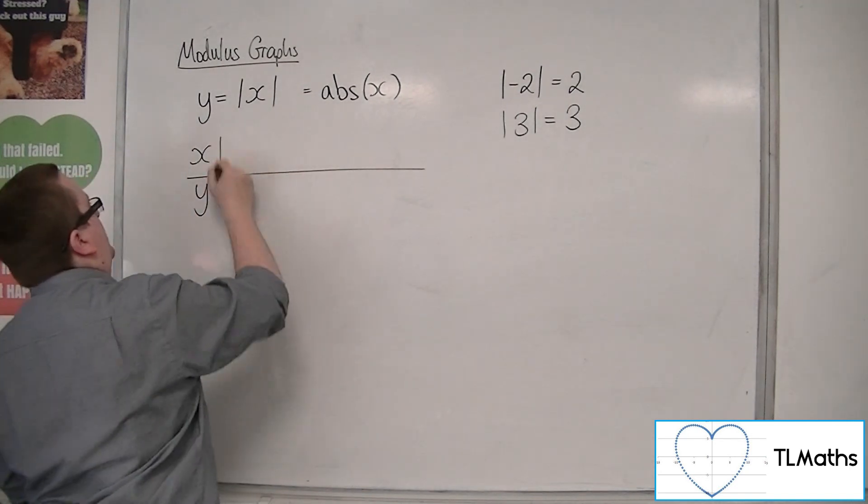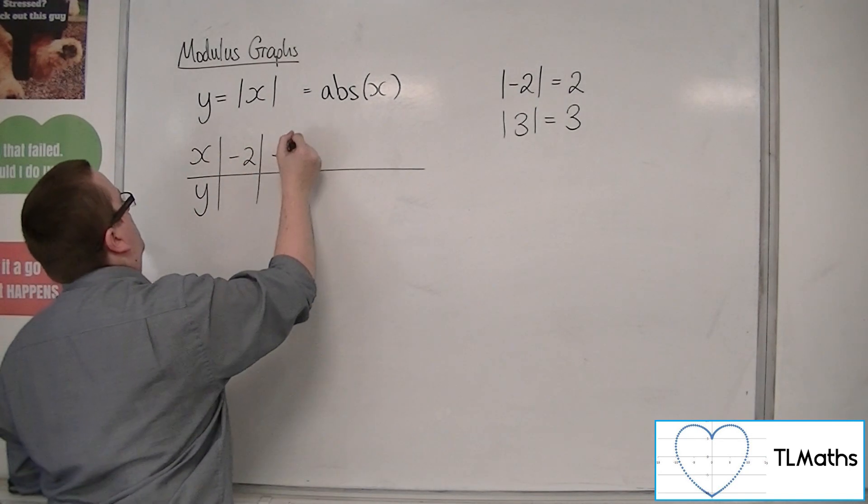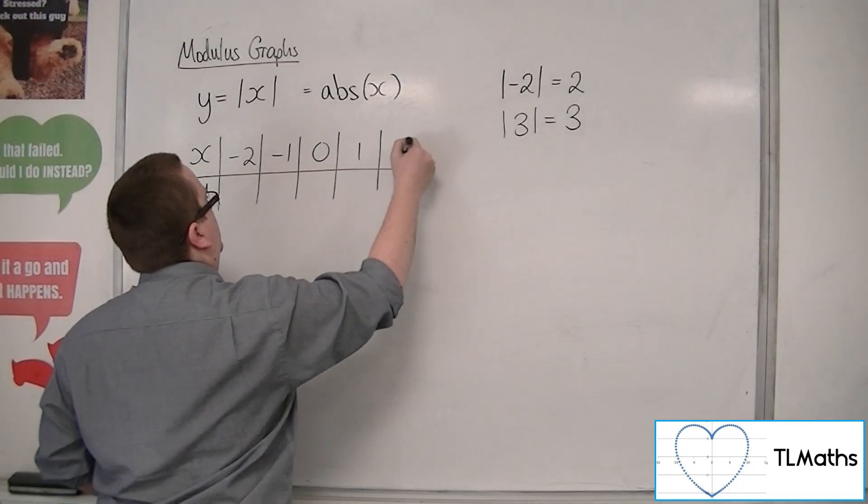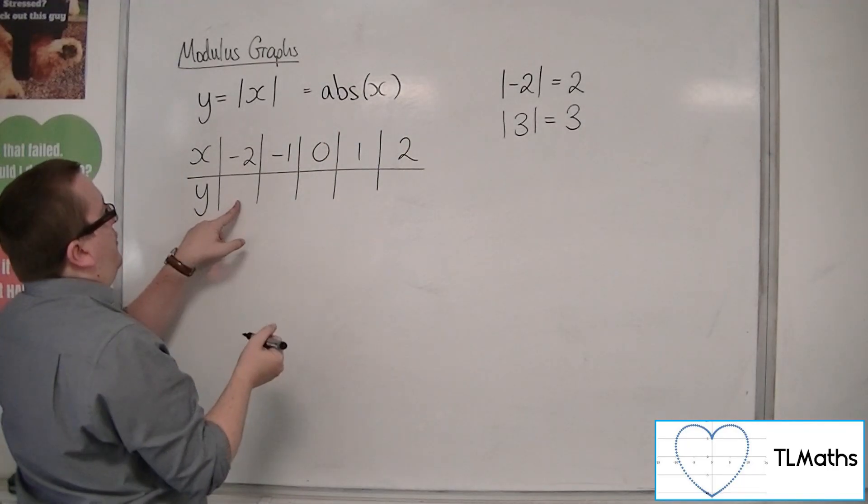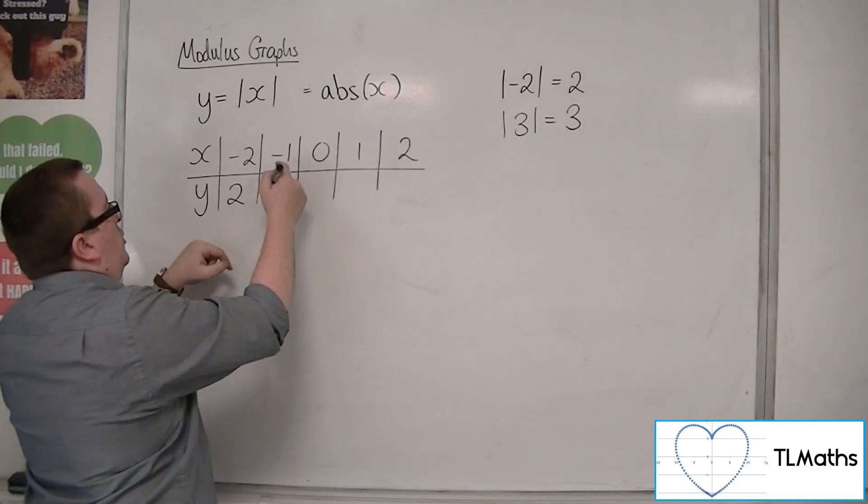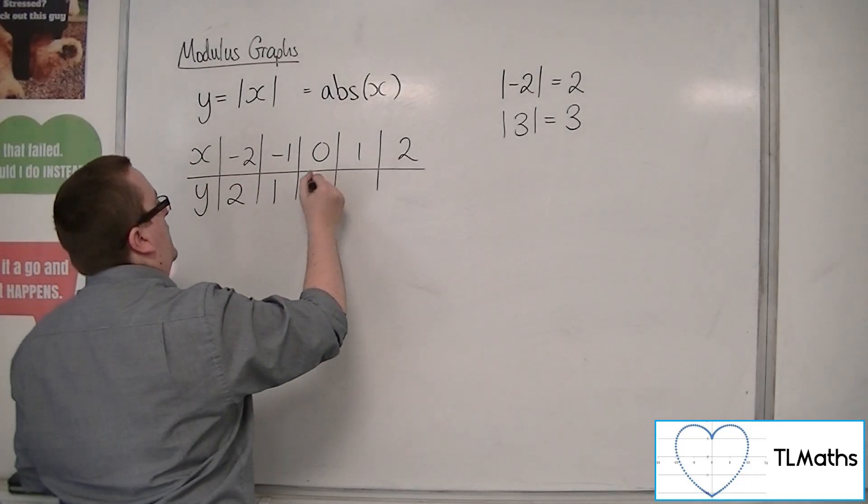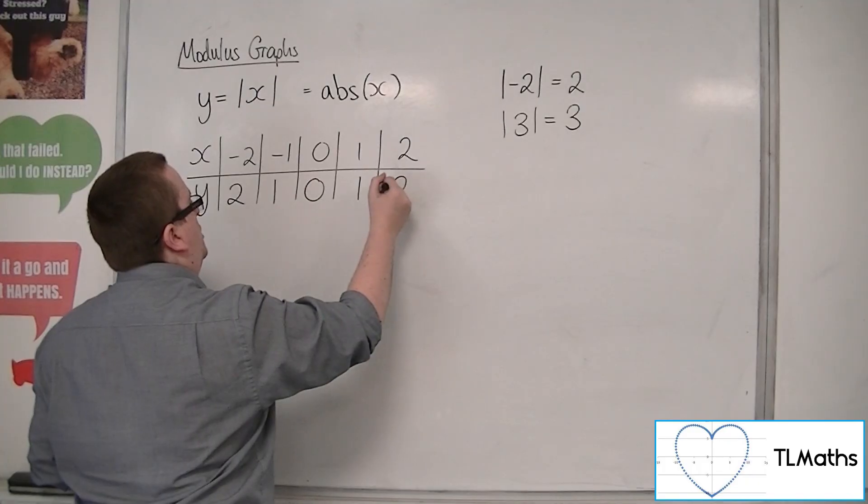So if we start at minus 2, we have minus 1, 0, 1, and 2. The modulus of minus 2 is 2. The modulus of minus 1 is 1, then 0, then 1, then 2.